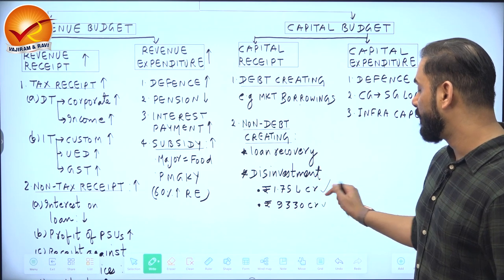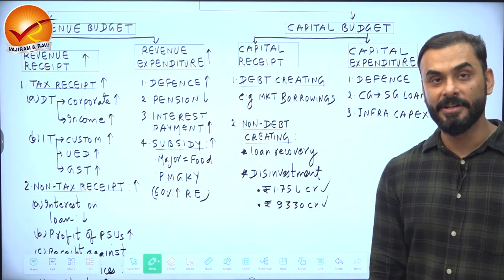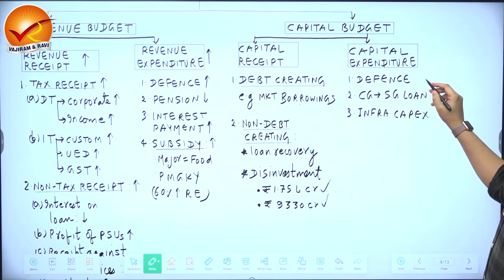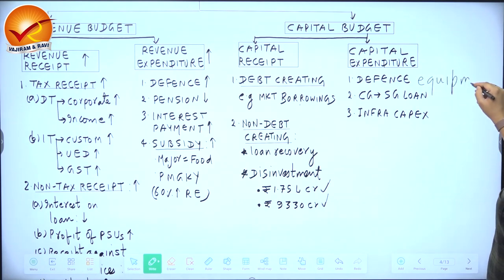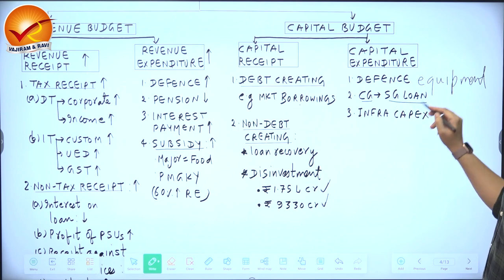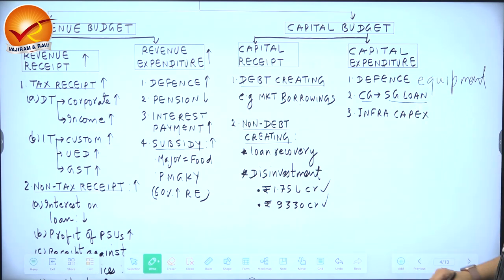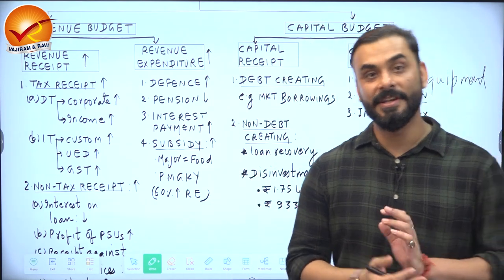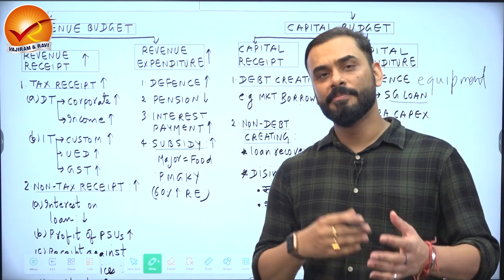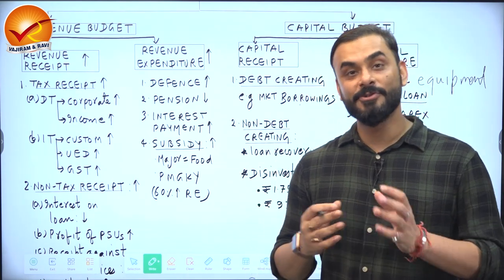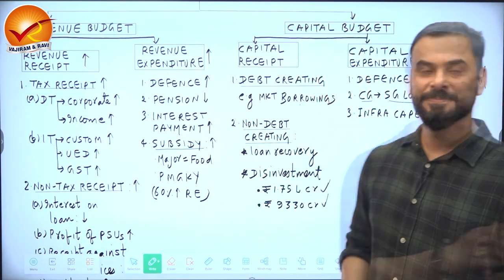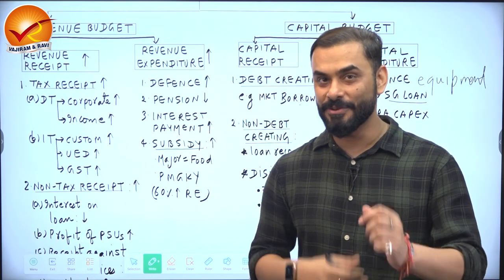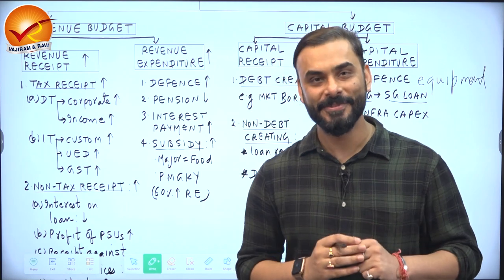Under capital expenditure, the government spends on defense equipment, provides loans to state governments, and acquires assets like buildings, bridges, machines, and equipment. Returning to the earlier question about direct and indirect taxes — if you look at the composition of India's tax revenue, corporation tax contributes 25%, income tax contributes around 25%, making direct taxes 50% of total collection, and excise duty, GST, and customs together make up the other 50%. This equal split of direct and indirect taxes is important for UPSC.